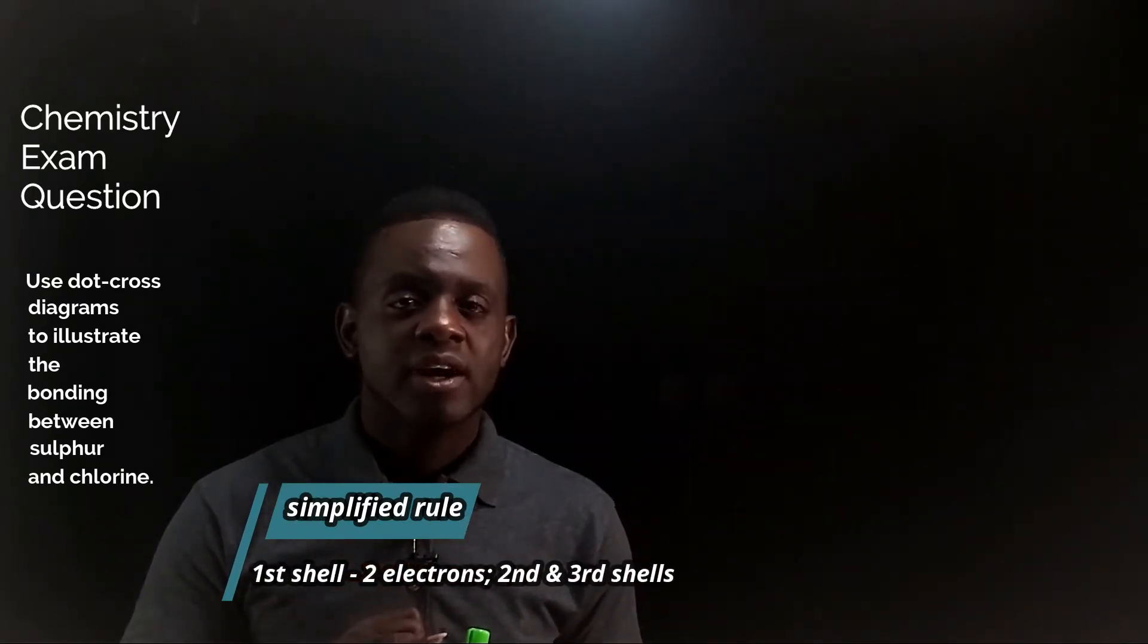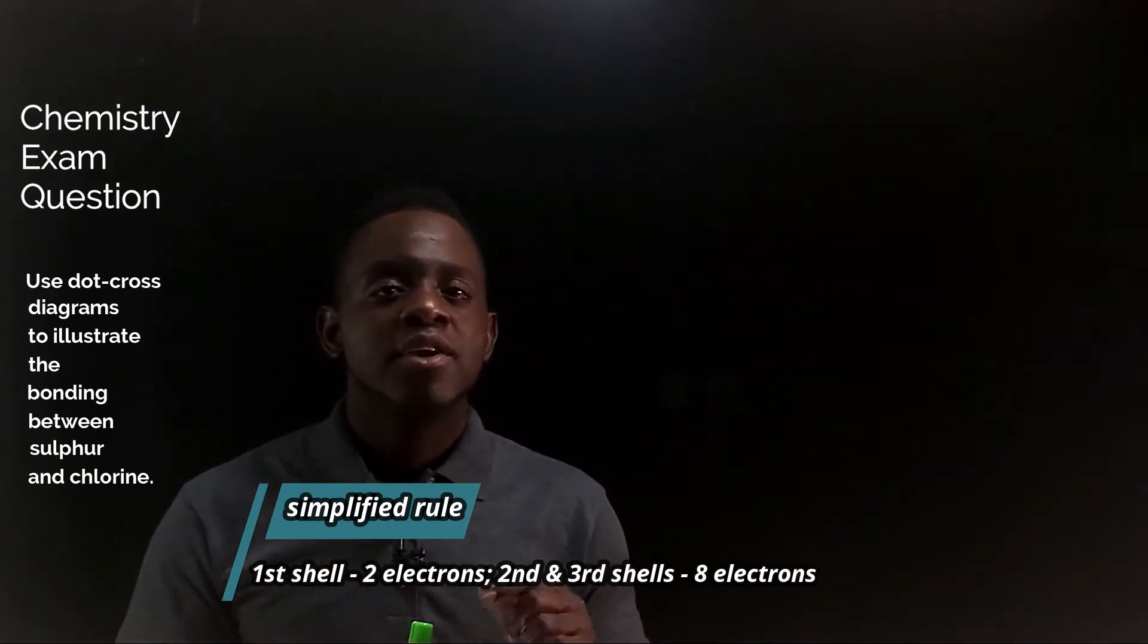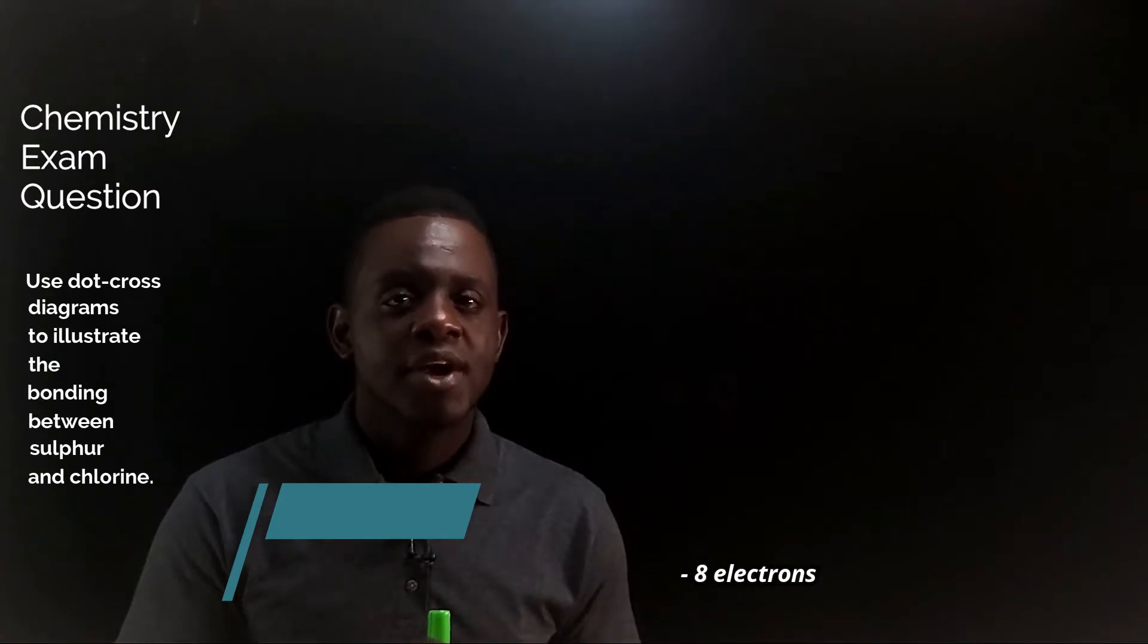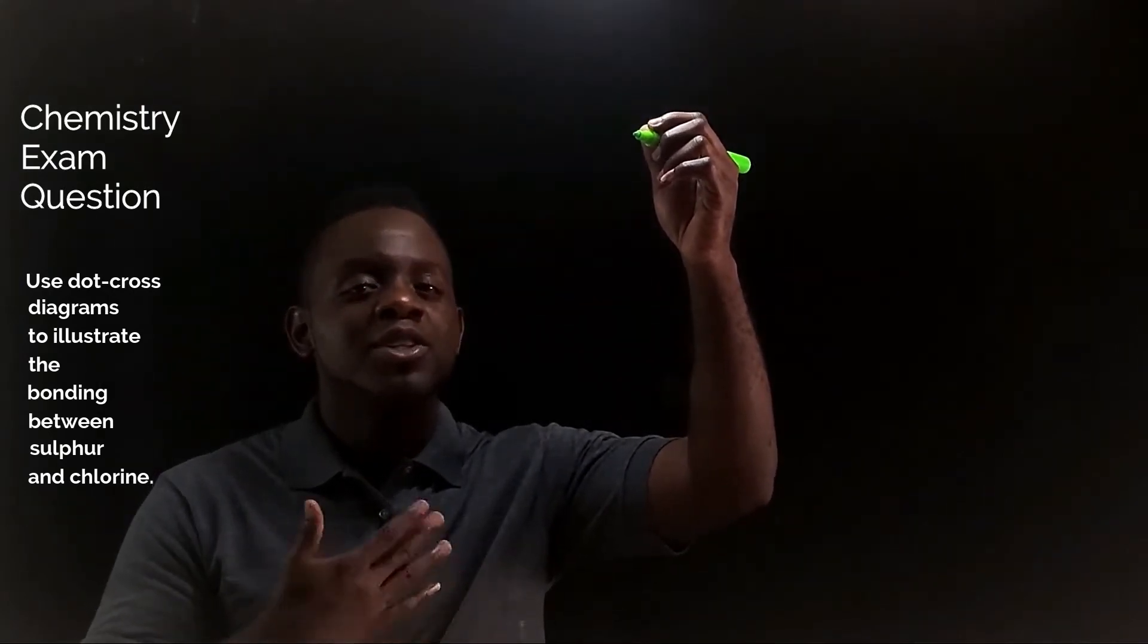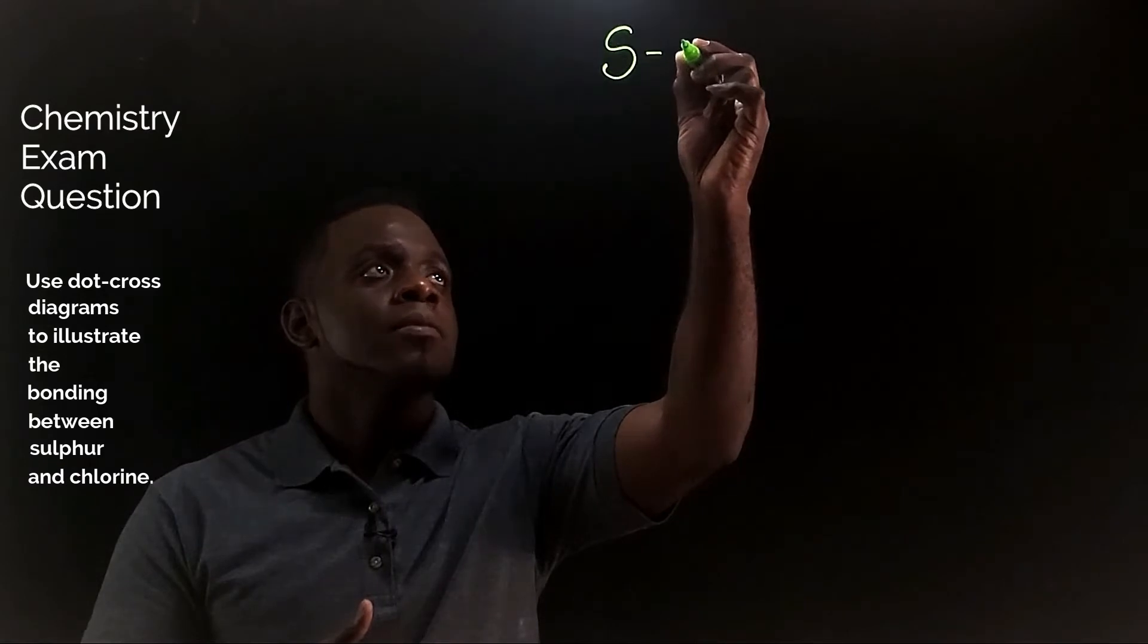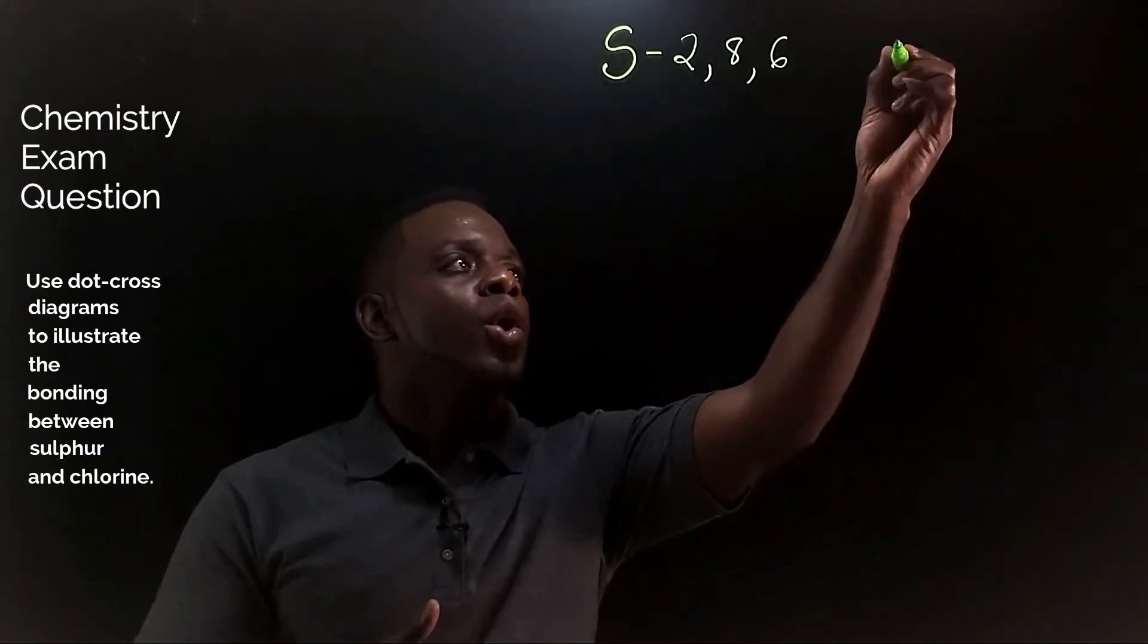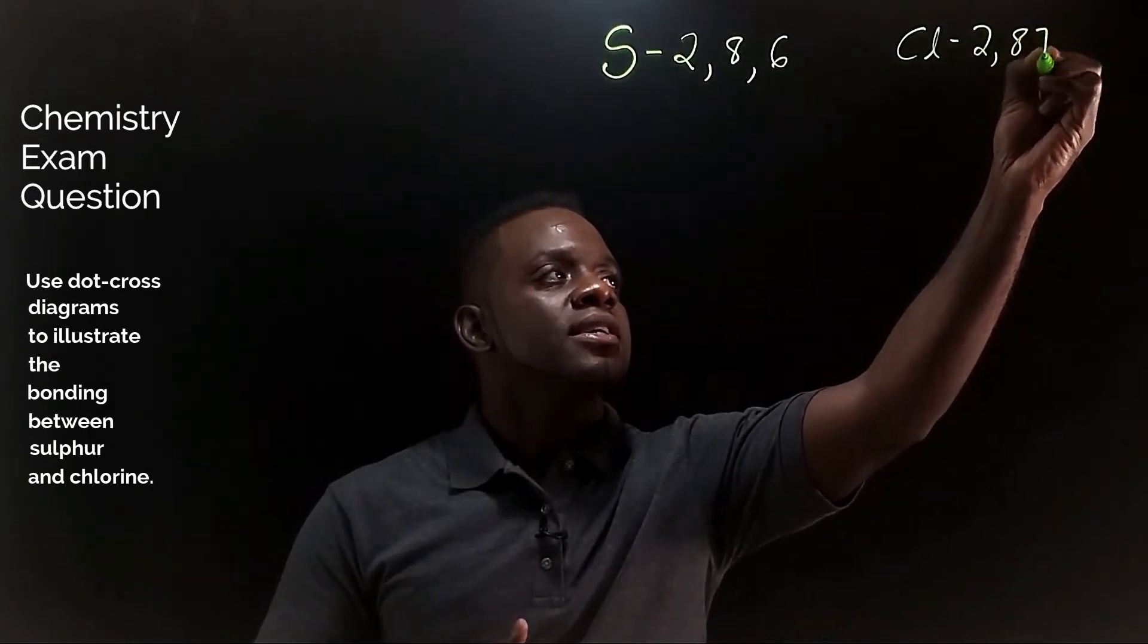Now using the rule that the first shell of an atom can hold a maximum of two electrons and the second and third shells can hold a maximum of eight electrons, we can write the electronic configuration for sulfur as 2,8,6 and that for chlorine will be 2,8,7.